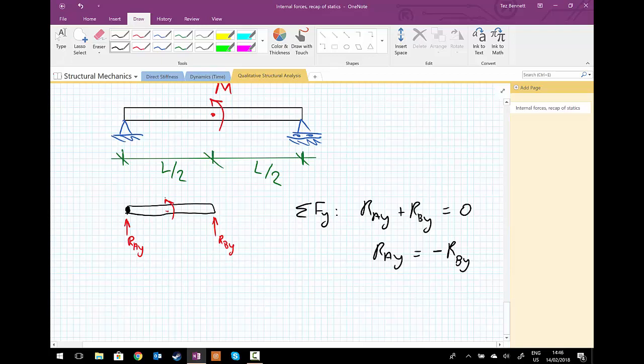And if this moment in the center is trying to rotate the beam round anticlockwise, the only way that this beam will not be rotating is if RBY points downwards.